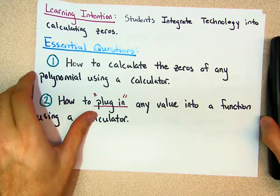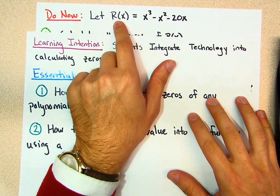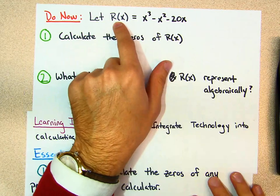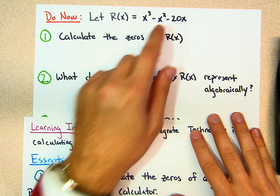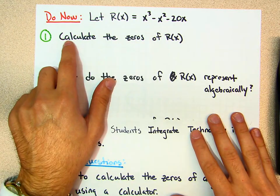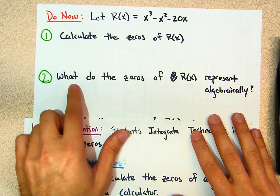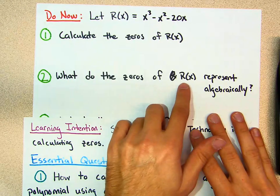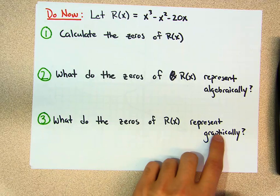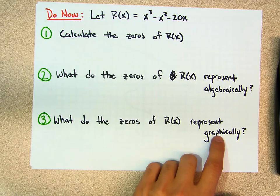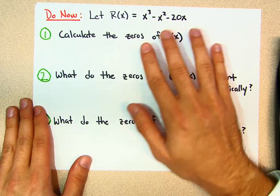So basically, if I were to ask you: let this r of x function be x cubed minus x squared minus 20x. If I say calculate the zeros of r of x — what do the zeros of r of x represent algebraically? What do they mean graphically? This we should be good with right now.